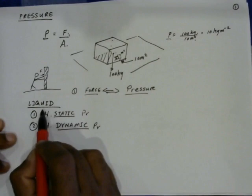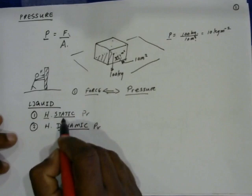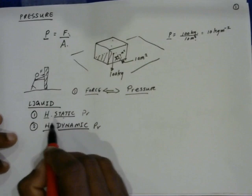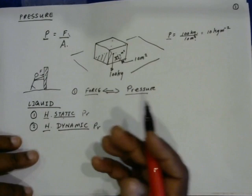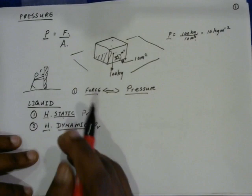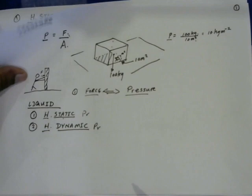When it comes to a liquid, we can say that there are two types of pressures. Number one is called hydrostatic pressure and number two is called hydrodynamic pressure. As you know, 'hydro' means liquid. Static means it doesn't move — it is the opposite of dynamic. Whatever is not dynamic is going to be static, meaning stable.